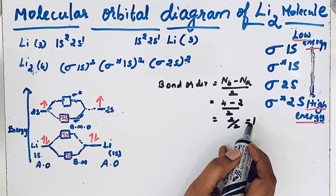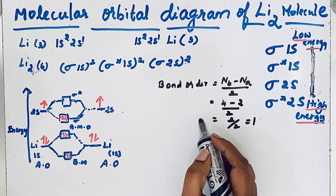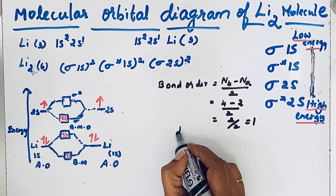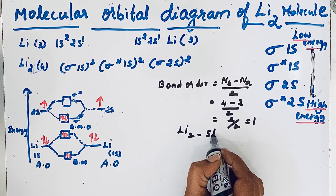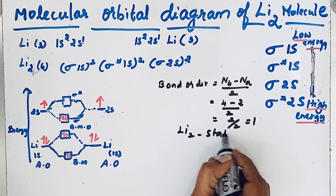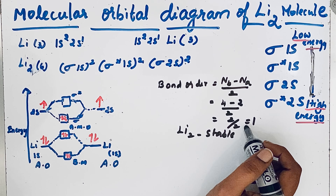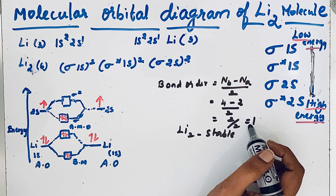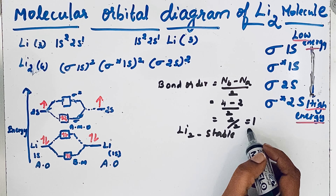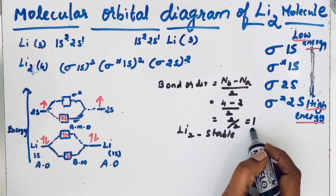Since the bond order is 1, this lithium molecule is stable — it is a stable molecule. The bond order of 1 means there is a single bond between the two lithium atoms.